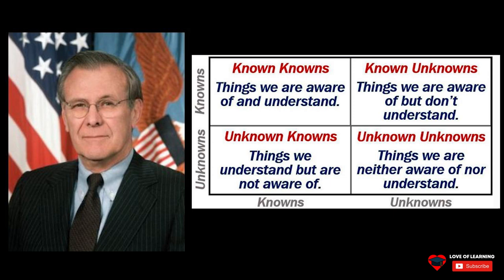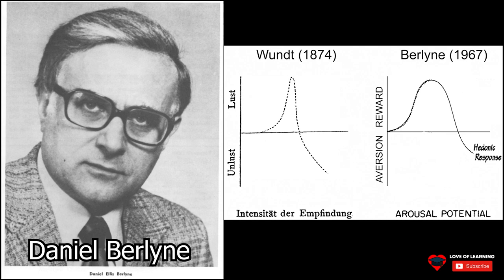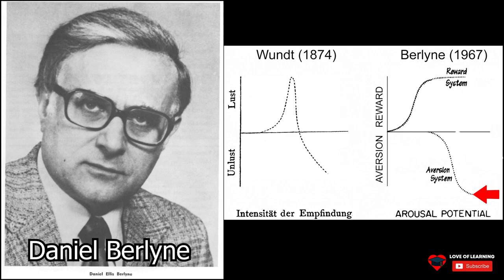In the 1950s, Daniel Berlyne was one of the first psychologists to offer a comprehensive model of curiosity. Berlyne proposed that the Wundt curve really represents the interaction of two separate brain functions: one encourages curiosity and exploratory behavior through a reward mechanism, and the other cautions against it by creating an unpleasant sensation. The positive reward system acts in such a way that up to a certain level, the more surprising or confounding the phenomenon we observe, the more curious we become.